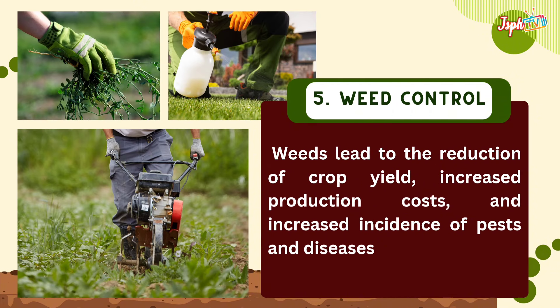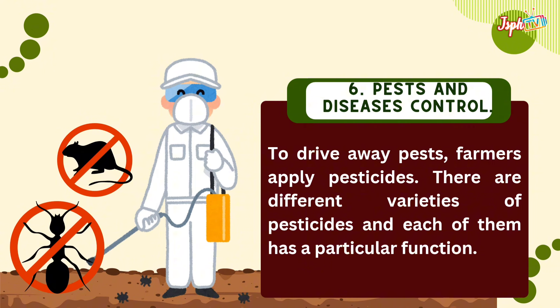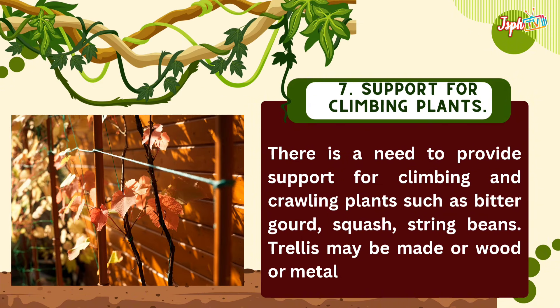Weed control is important as weeds lead to reduction of crop yield, increased production costs, and increased incidence of pests and diseases. For pest and disease control, farmers apply pesticides, with different varieties serving particular functions. There is also a need to provide support structures for climbing and crawling plants such as bitter gourd, squash, string beans, and trellises made of wood or metal.